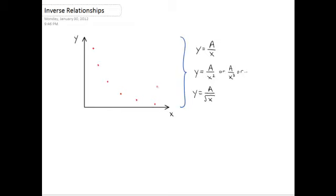An inverse function looks something like this, where you have y equals a constant divided by x, y equals a constant divided by x squared, or x cubed, or square root of x. These fall under the category of inverse functions, which have the general form y equals a constant divided by x raised to an exponent.